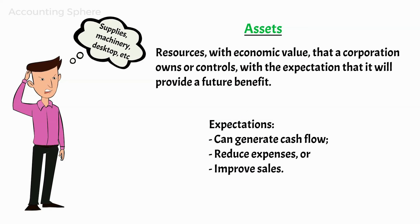However, if John provides a service to a customer but isn't paid right away, the sum due to Fast Print becomes an asset known as accounts receivable.